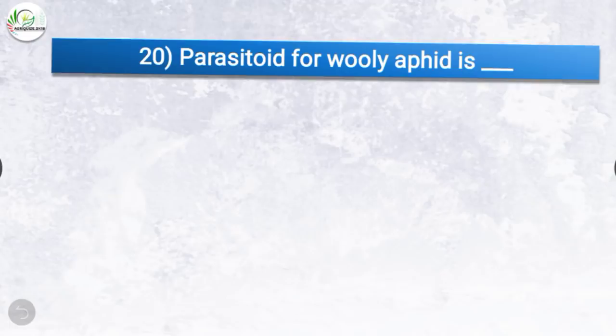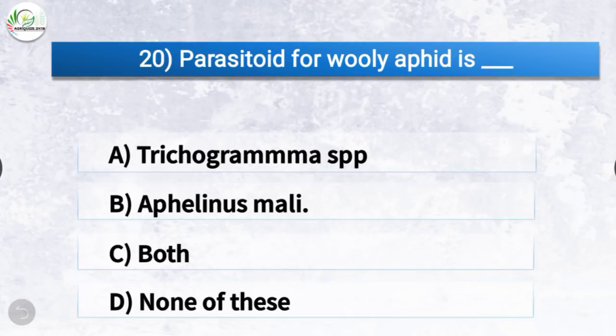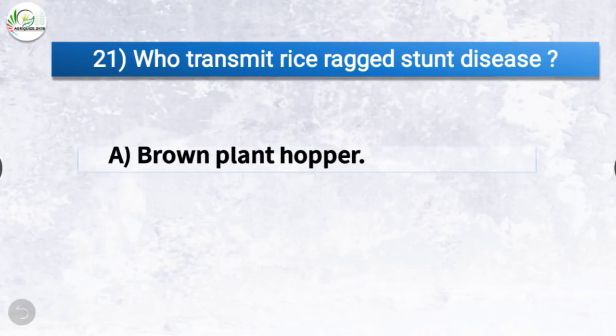Question number 20: Parasitoid for woolly aphid is? The correct answer is option B, Aphelinus mali. Parasitoid for woolly aphid is Aphelinus mali.